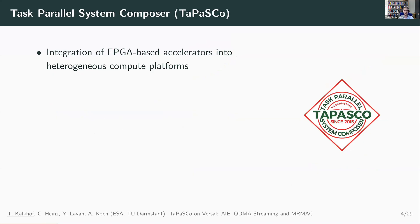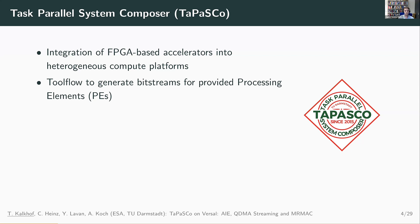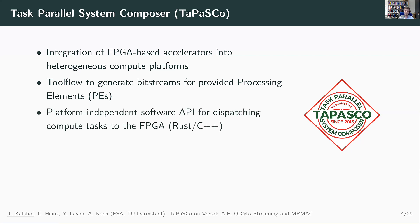Before going into more detail on the Versal architecture, I want to present our Tapasco framework. Tapasco has been developed for a few years now at our group, and it's designed to integrate FPGA-based accelerators into different heterogeneous compute systems. On one side, we have a tool flow to build a bitstream around custom hardware accelerators — we call them processing elements or PEs. We also provide a platform-independent software API in Rust and C++ to include these accelerators into a host application and dispatch compute tasks to the FPGA.